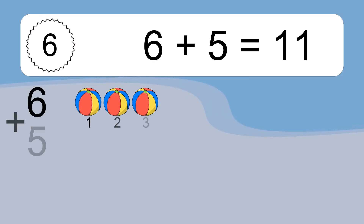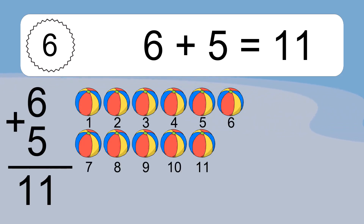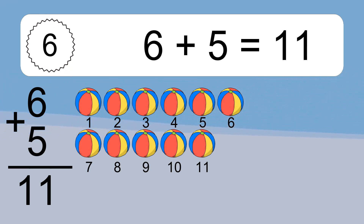10 plus 5 equals 11. Let's count it: 1, 2, 3, 4, 5, 6, 7, 8, 9, 10, 11.